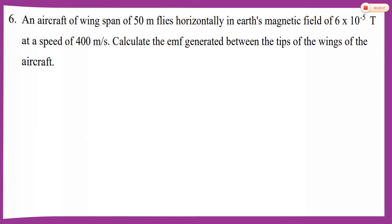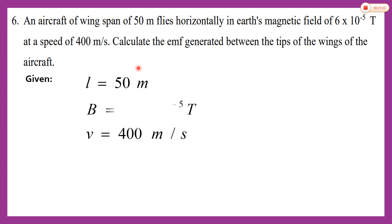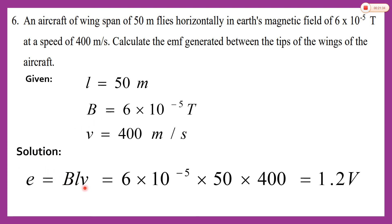The next problem: an aircraft with a wingspan of 50 metres flies horizontally in the Earth's magnetic field at a speed of 400 metres per second. Calculate the EMF generated between the tips of the wings. The formula is E = BLV, where B is the magnetic induction, L is the length, and V is the velocity. Substituting the given values, the answer is 1.2 volts.